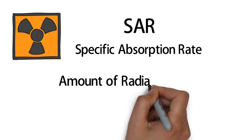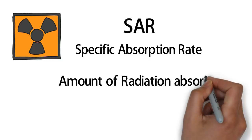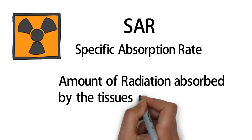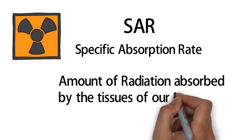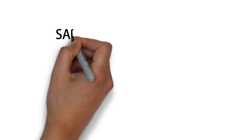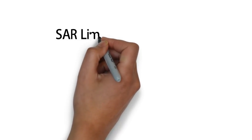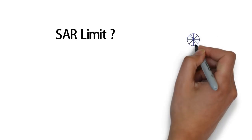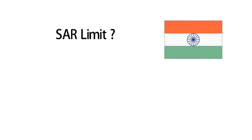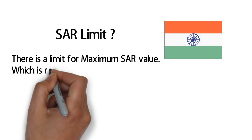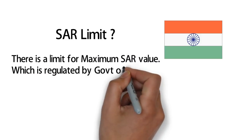SAR is the Specific Absorption Rate — that is how much radiation is absorbed by the body. The radiation limit is 1.6 watts per kilogram, which is the same limit used in the SAR rating.